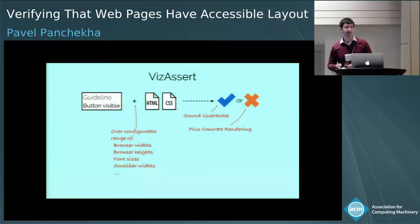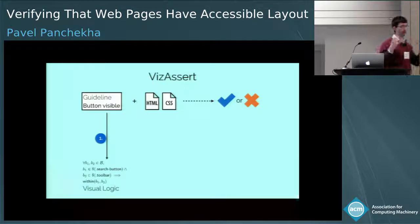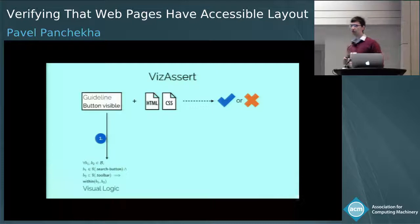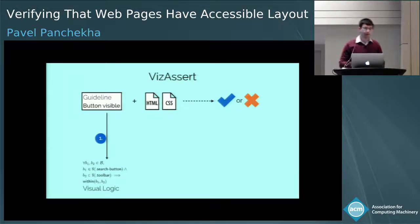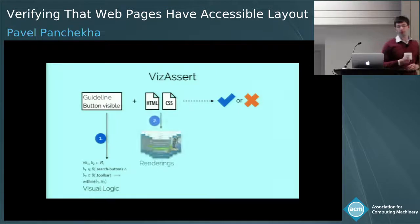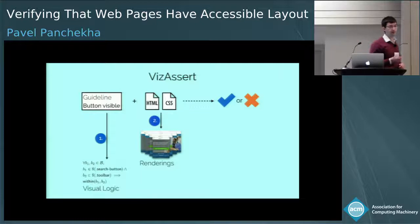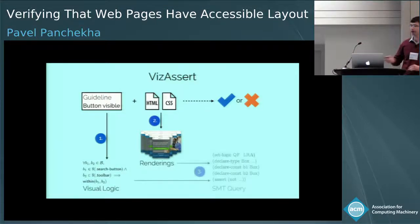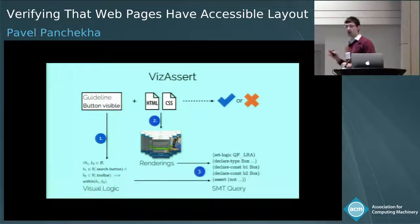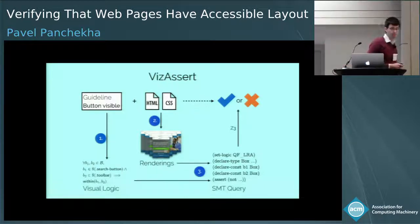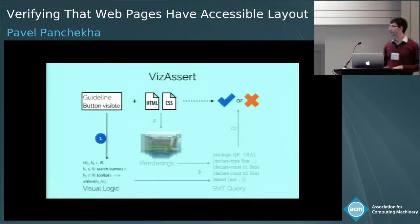It does this in three steps. First, the VisAssert user — that's a web developer — formalizes their accessibility guideline in visual logic. Then, VisAssert constructs the space of possible renderings of the page given those parameters, using a semantics of CSS that we've developed. And finally, this space of renderings is searched for a counter-example to that assertion by encoding it to SMT, and then using an off-the-shelf SMT solver to solve that query. I'm going to go into each of these, and I'll start with visual logic.